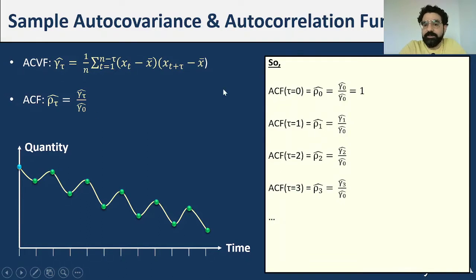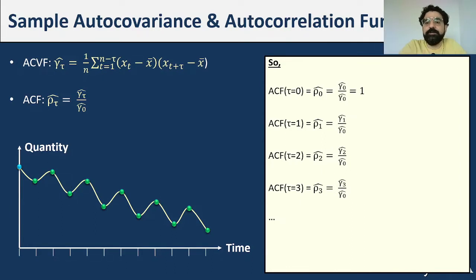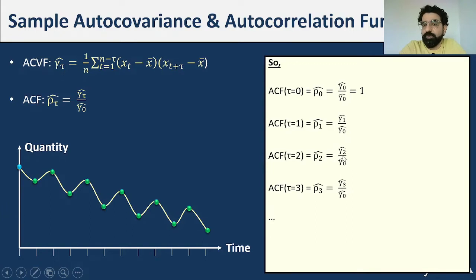The correlation at lag 0 is always 1, because we divide gamma-hat(0) by gamma-hat(0). For lag 1 it is gamma-hat(1) over gamma-hat(0), for lag 2 it is gamma-hat(2) over gamma-hat(0), and so on.